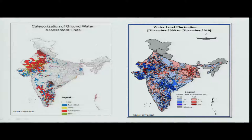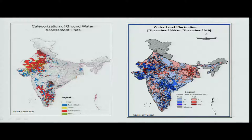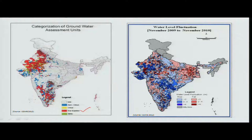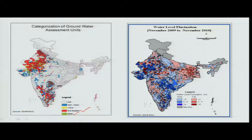This is a nationwide assessment showing whether groundwater withdrawal is more than recharge. The red-colored areas visible here are regions where groundwater withdrawal exceeds recharge — if this continues, there will be permanent non-availability of groundwater. Some areas are marked as saline, where the salt content in the groundwater has increased because the volume has decreased.